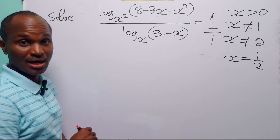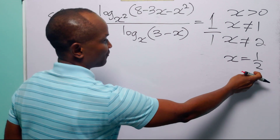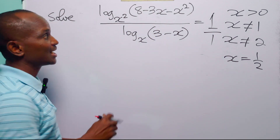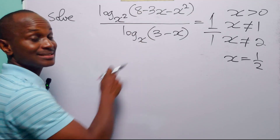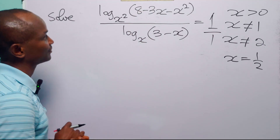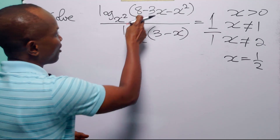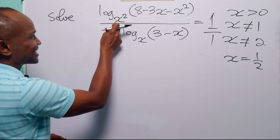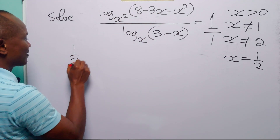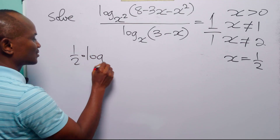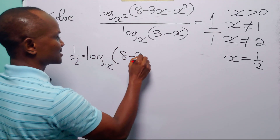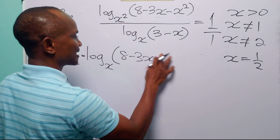To check our answer, let us substitute x equals one-half into the left-hand side of the original equation. We will evaluate the numerator and denominator separately and then divide. Note that log base x² of the expression is the same as one-half times log base x of (8 minus 3x minus x²).